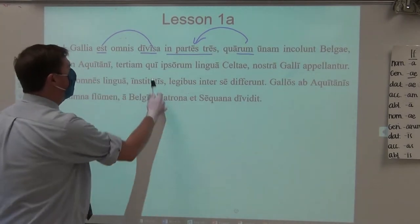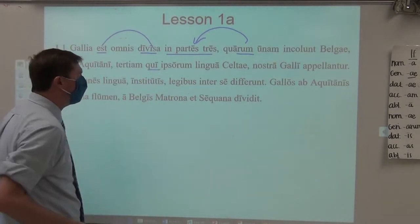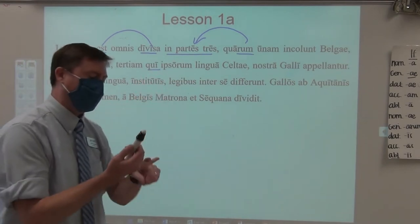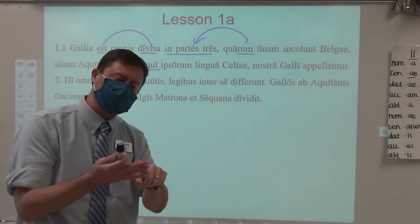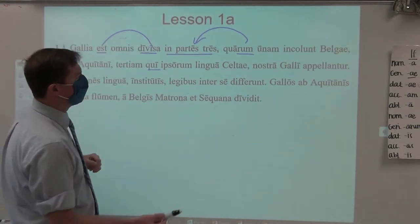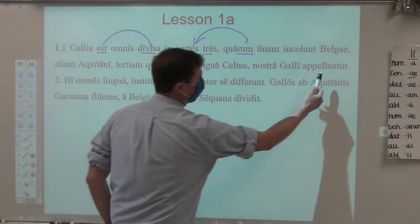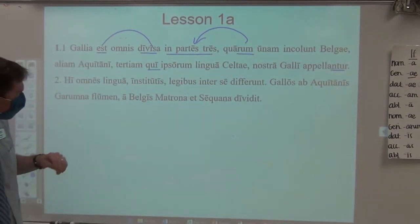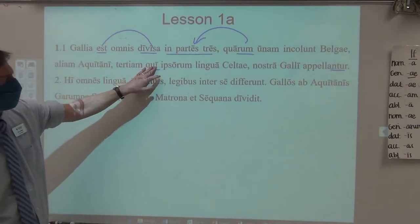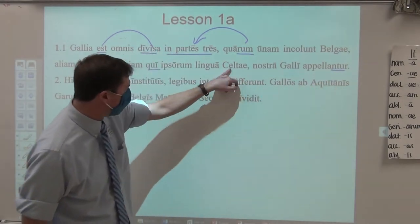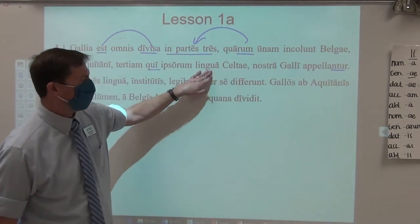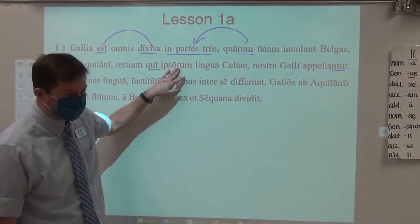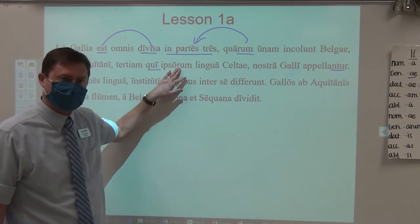And a third one — 'they who.' Remember when you're dealing with the 'who's, there are six of them: I who, you who, he who, we who, y'all who, they who. You will know which 'who' it is by looking at what the verb is indicating. So: 'they who are called Celts' — by, with, because of, from, in, on, at — in the language of themselves. That's what they call themselves. And in our language, they who are called Gauls inhabit that third part.